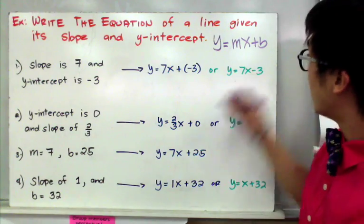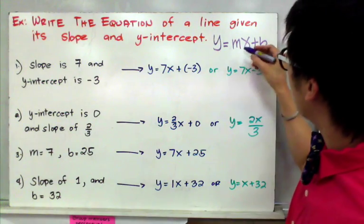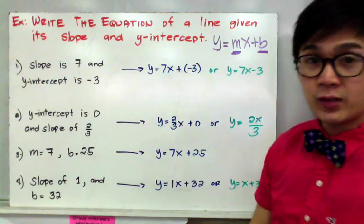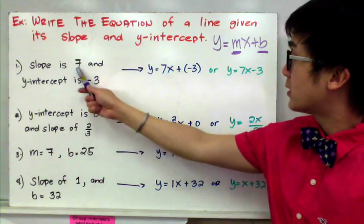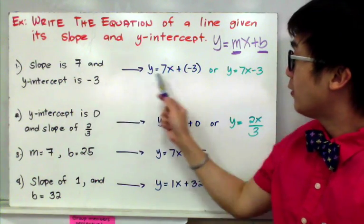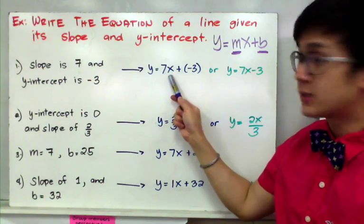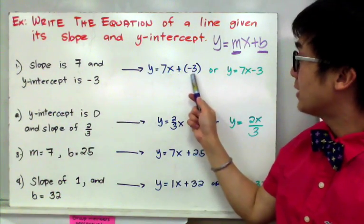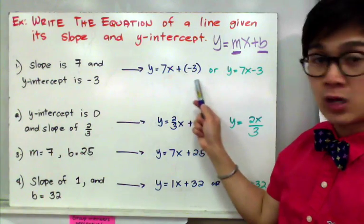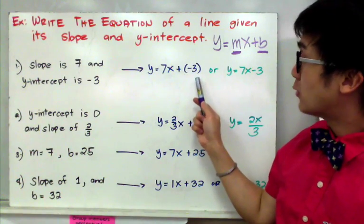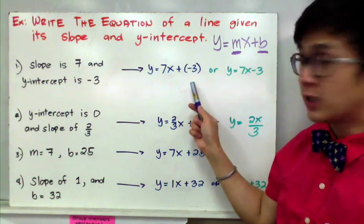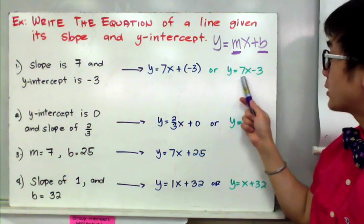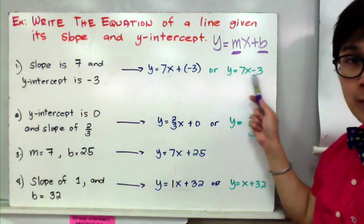By direct substitution, all we need to do is replace m and b by the given parts. Since we have the slope of 7, we have y equals 7x plus the y-intercept of negative 3. To further simplify, we can write the slope-intercept form as y equals 7x minus 3. This is the equation of a line given the slope and the y-intercept.